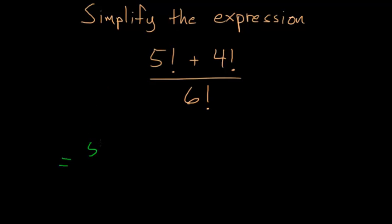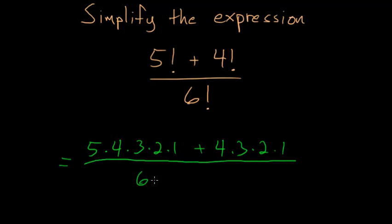So 5 factorial is just 5 times 4 times 3 times 2 times 1, and 4 factorial is just 4 times 3 times 2 times 1, and 6 factorial is 6 times 5 times 4, and so on.